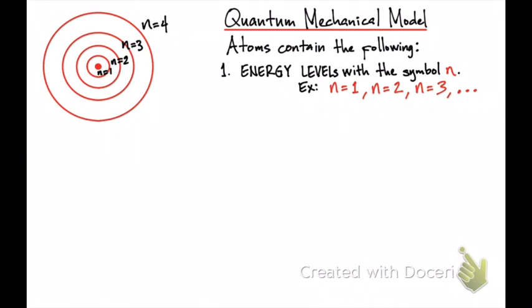So n=1 is lower in energy than n=2, and n=4 is greater in energy than n=3, and so on. The second component is that atoms contain energy sublevels. In each energy level, you have at least one sublevel, and the number of sublevels matches the energy level. So energy level 1 has one sublevel, energy level 2 has two sublevels, energy level 3 has three sublevels, and so on.